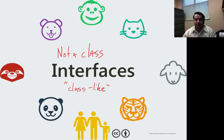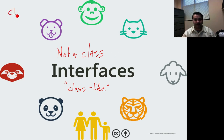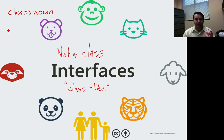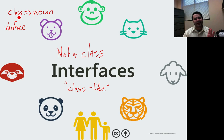Interfaces are sort of more like — you can think of it this way — a class is like a noun. You know, dog, cat, tiger, human — those are more noun concepts. But something like an interface is more a quality than a noun. It's going to sound noun-ish, but it's not going to be noun-ish. It's more a quality of a noun.